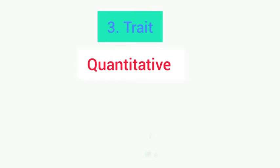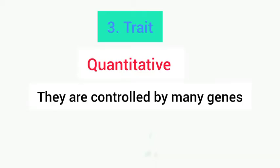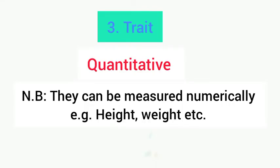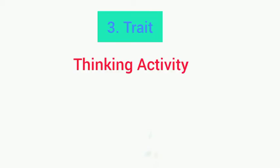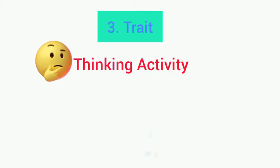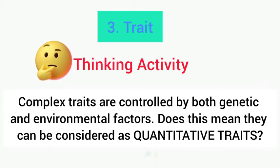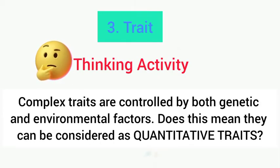For quantitative traits, you can measure them. They are caused by polygenic effects, meaning they are controlled by many genes. Examples are height and weight — things you can actually measure. I want you to try this thinking activity; it will help you a lot. Take your time — you can pause the video.